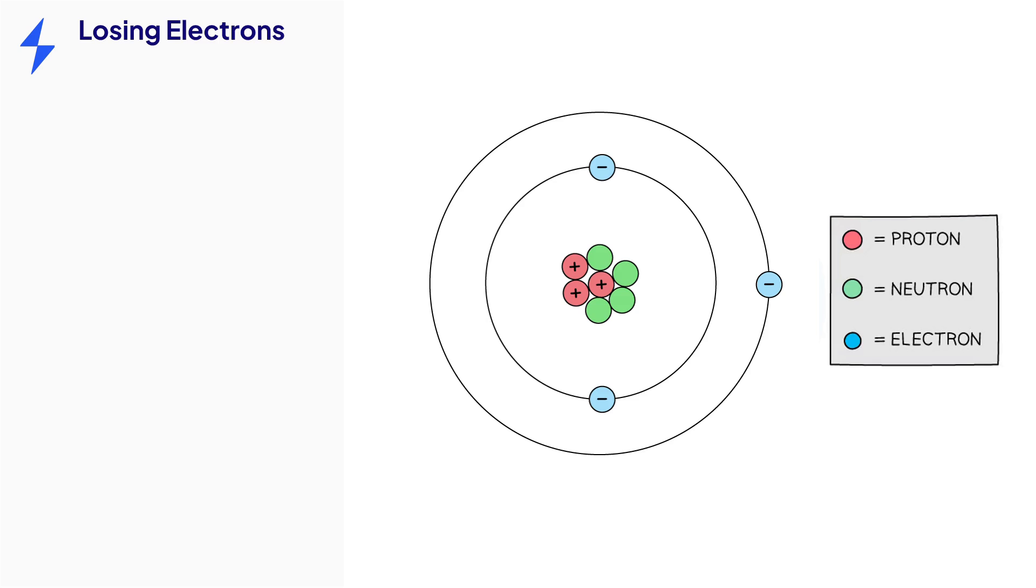Protons and neutrons are found inside the nucleus and electrons are found outside the nucleus. Remember that electrons are negatively charged, protons are positively charged, and neutrons are neutral.